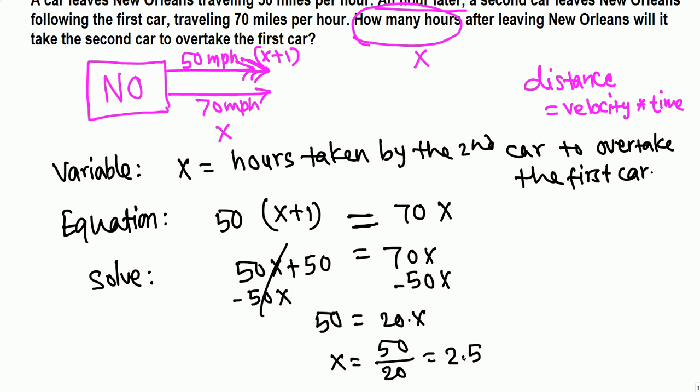We can check our work in this way. In 2.5 hours, second car travels how far? 70 at the rate of 70 times 2.5. So 70 times 2 is 140, and half means 35, so 140 plus 35 equals 175 miles.